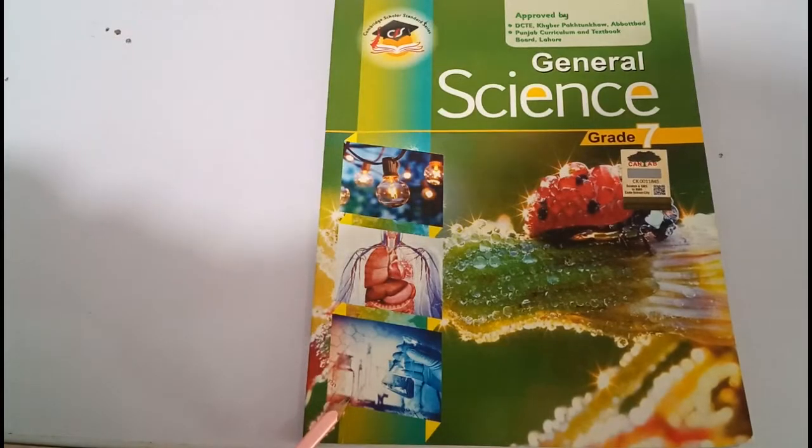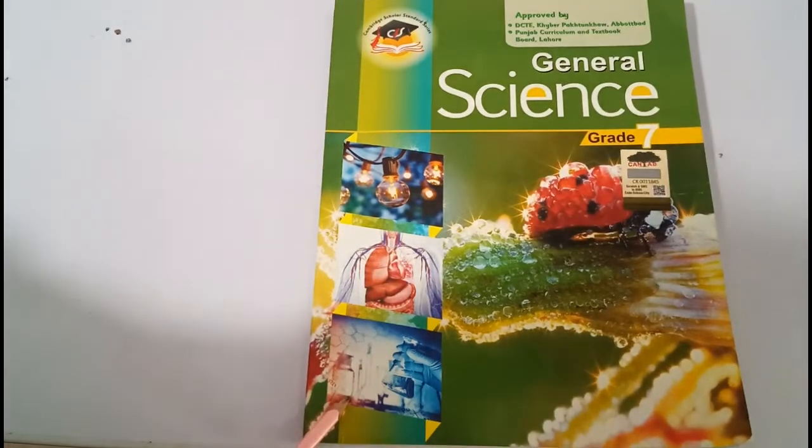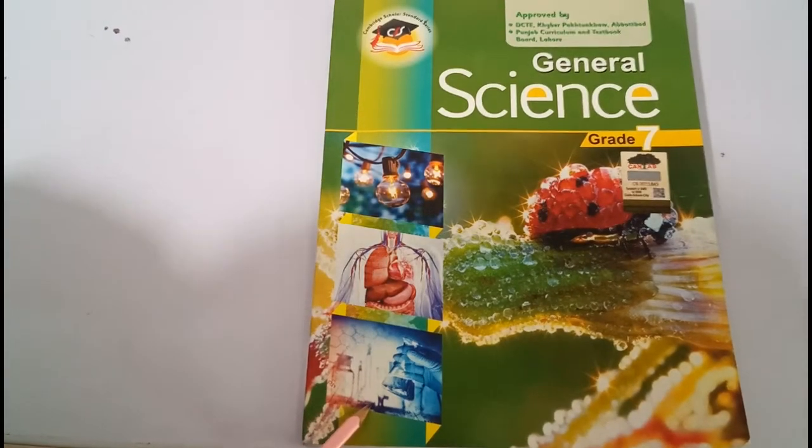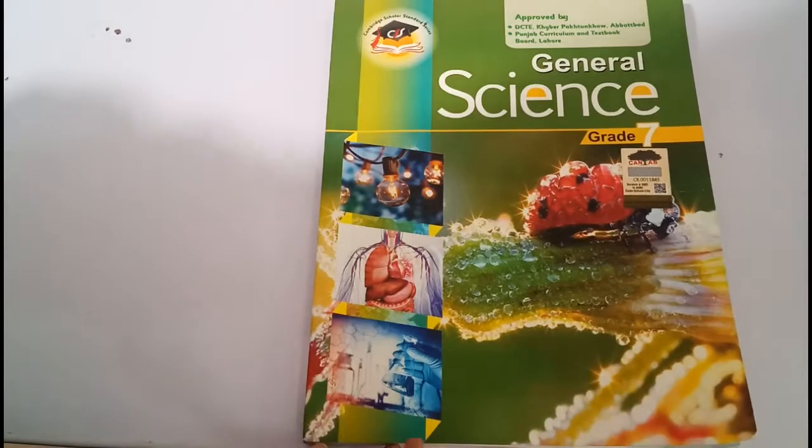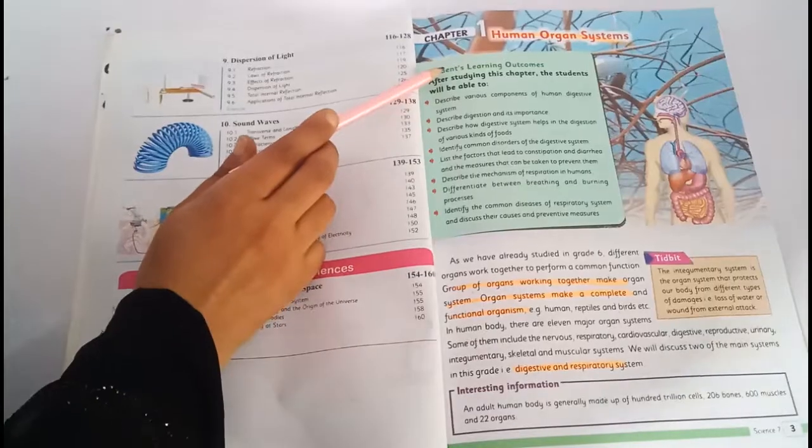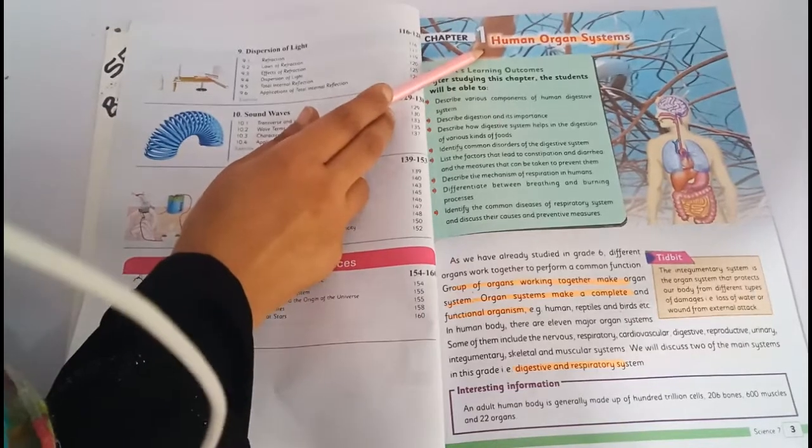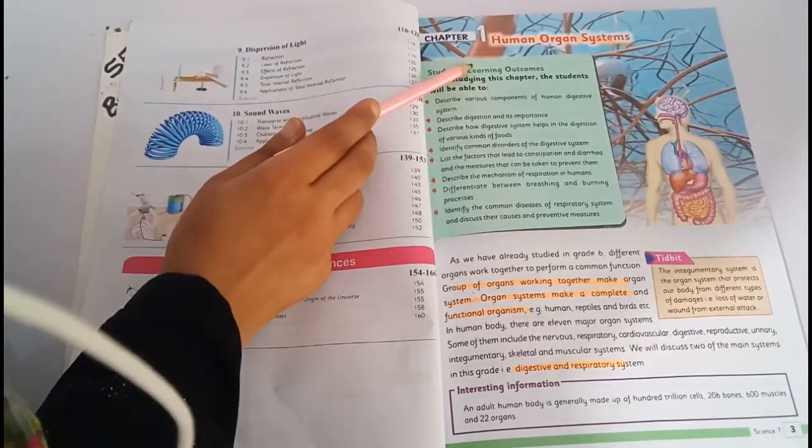Hello students, this lecture of General Science is recorded by Sarhar Education System for Class 7. This is your General Science book. Open your book. Open page number 3. Our first unit is Human Organ System.